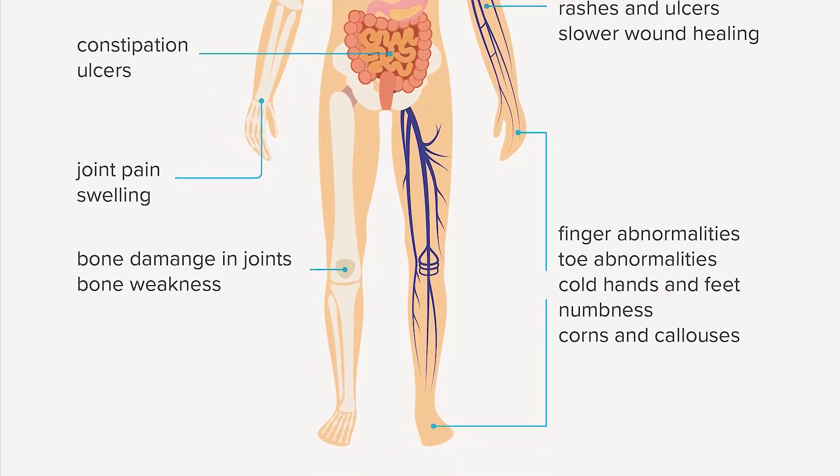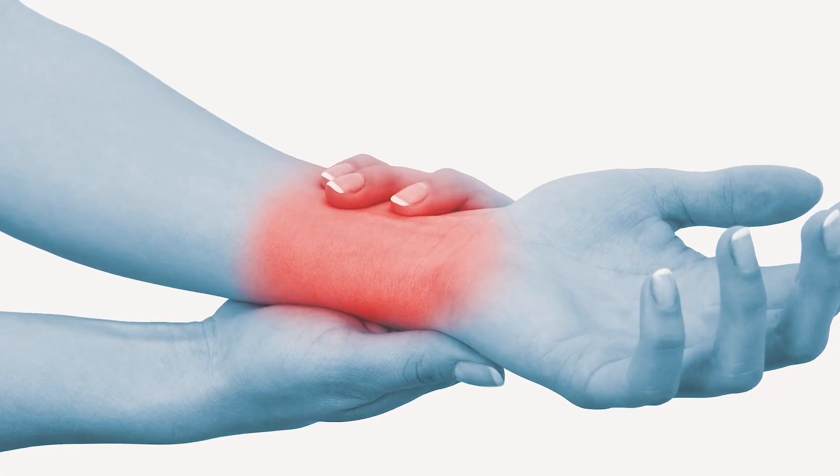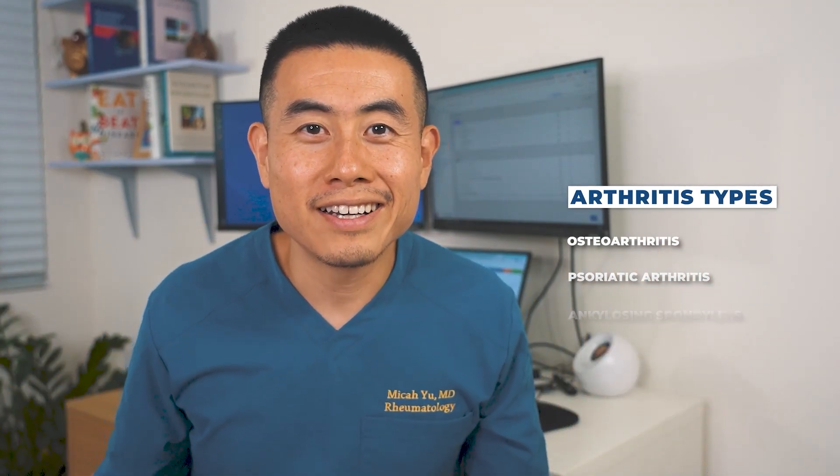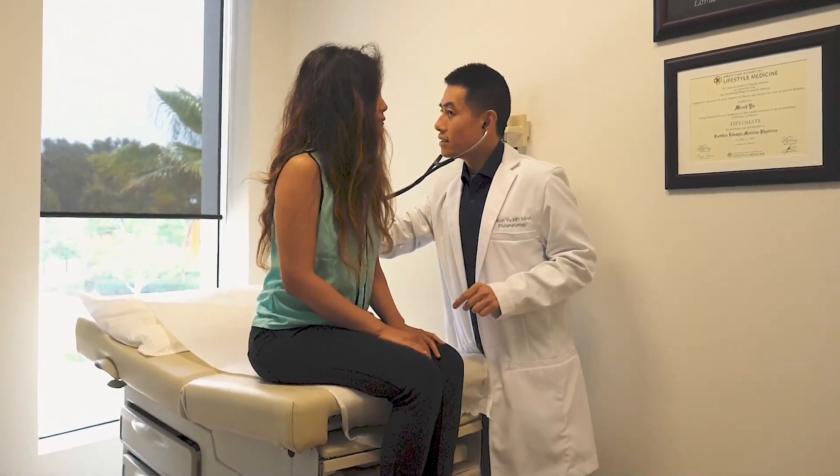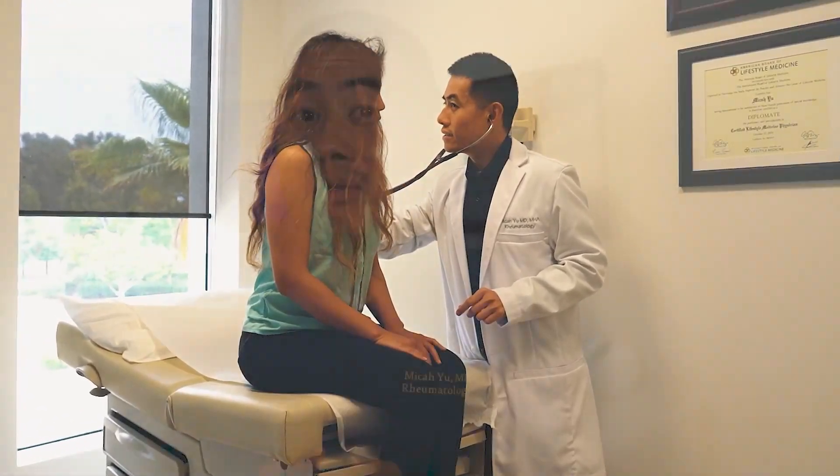Rheumatoid arthritis is a systemic autoimmune disease that can affect multiple organs of the body, but usually people manifest with joint pain and swelling. How do we as rheumatologists distinguish rheumatoid arthritis from other arthritides like osteoarthritis, psoriatic arthritis, and ankylosing spondylitis? Let's talk about the questions I ask my patients. I first ask them when did your pain start, what's the pattern of the pain, and is your pain worse in the morning than at night?